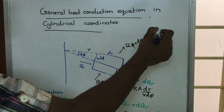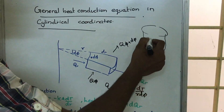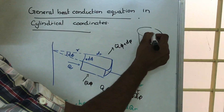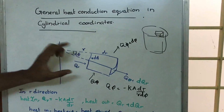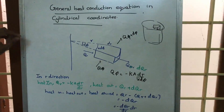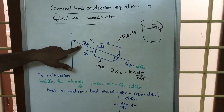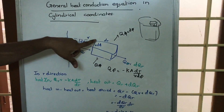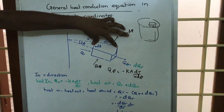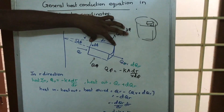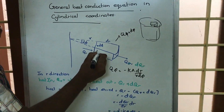We are deriving the heat conduction equation in cylindrical coordinates. Here we have a cylinder, and we take an element out of it. That element is enlarged, where this angle is dφ, this distance is r, so r·dφ is the arc length. This distance is dr and this distance is dz.